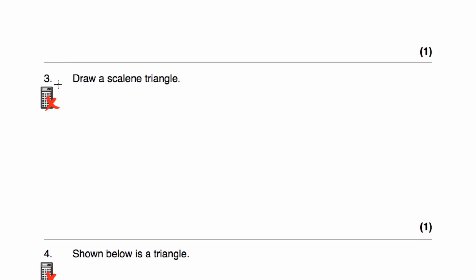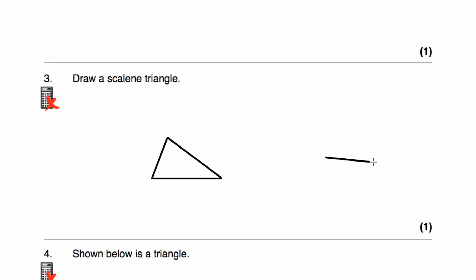Question number three says draw a scalene triangle. A scalene triangle is a triangle where all three sides have different lengths and the three angles are different sizes. Get your ruler and pencil and make sure each of the three sides have different lengths, so you don't accidentally draw an isosceles or equilateral triangle. Alternatively, you could draw a triangle with an obtuse angle — something with an angle bigger than 90 degrees — and as long as those three sides have different lengths, it's a scalene triangle.